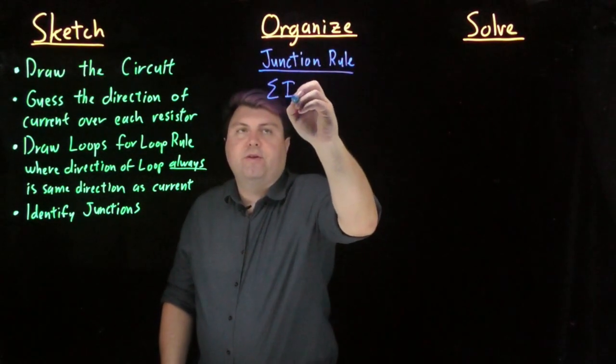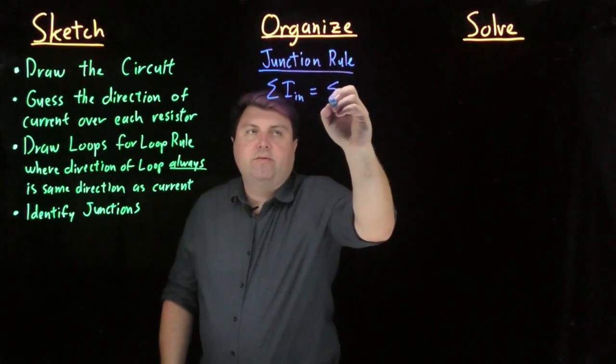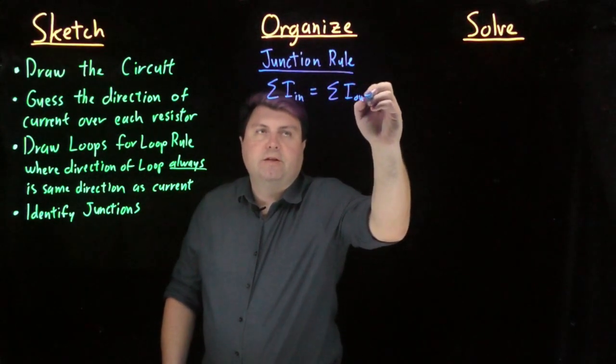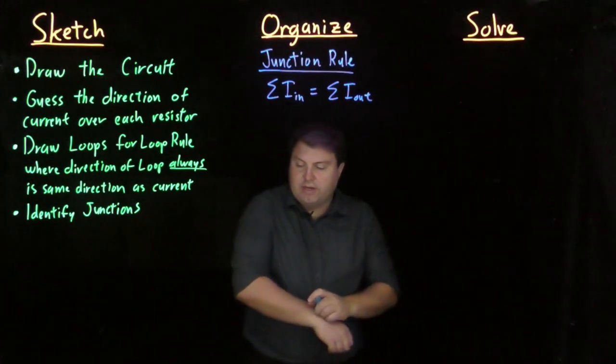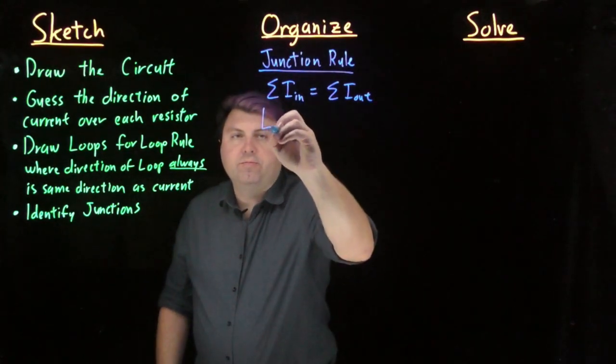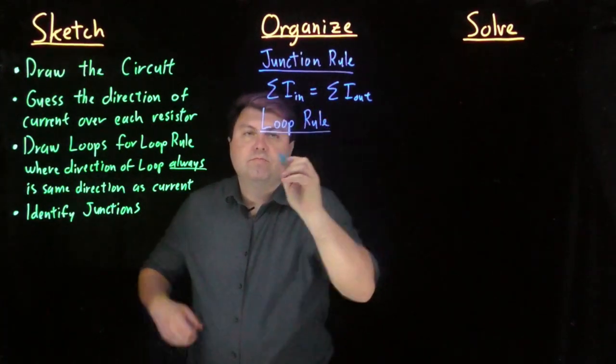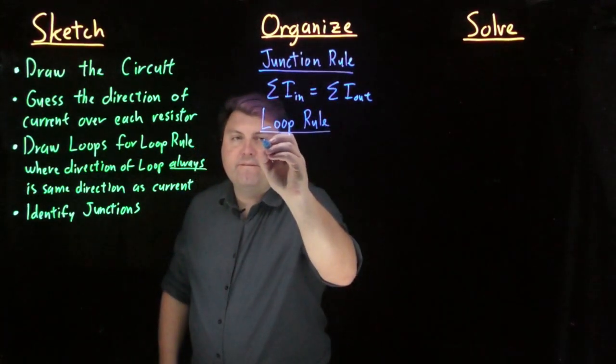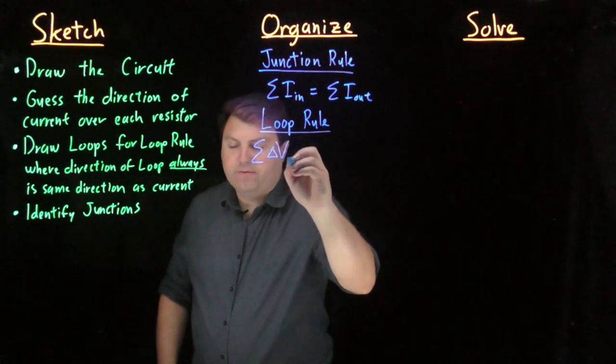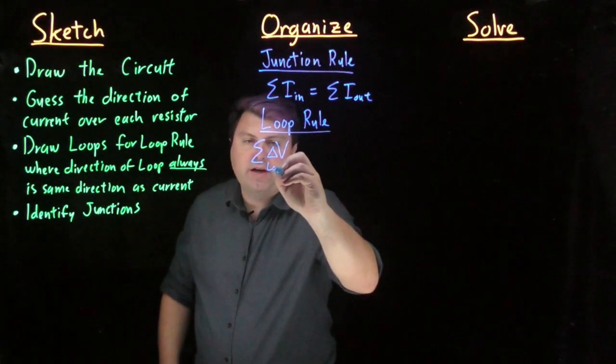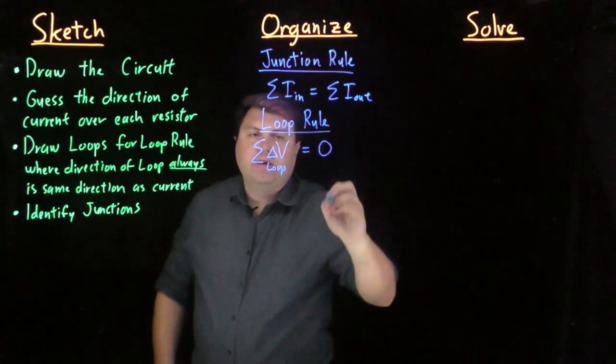Which is that the sum of the currents in is equal to the sum of the currents out. And we have our loop rule, which is that the sum of all the delta V over the entire loop is equal to zero.